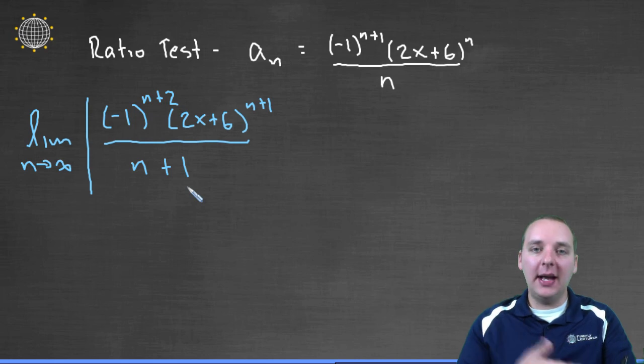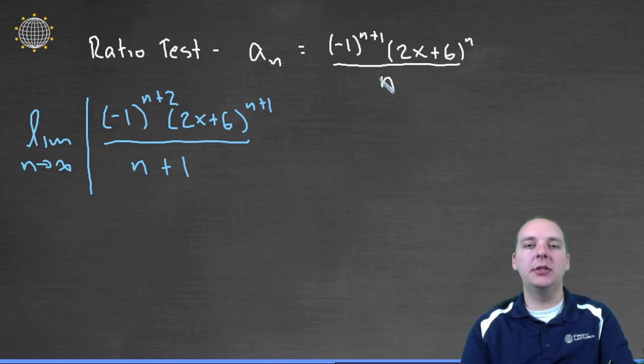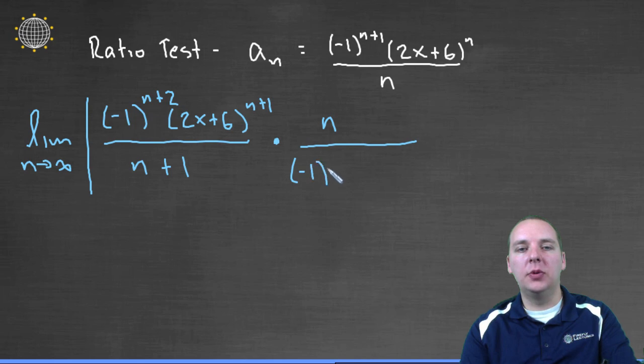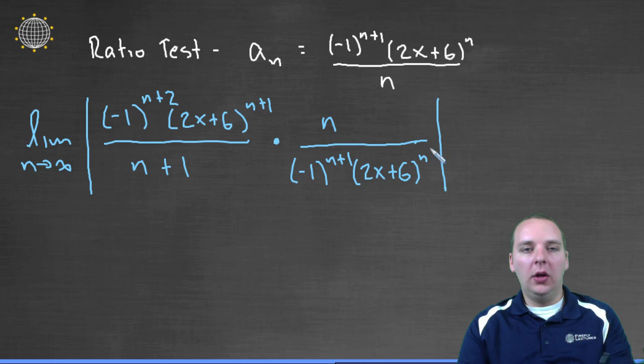Divided by this entire expression, but since that's another fraction, let's instead multiply by the reciprocal instead. So we have n over minus 1 to the n plus 1 times 2x plus 6 to the nth power, absolute value.